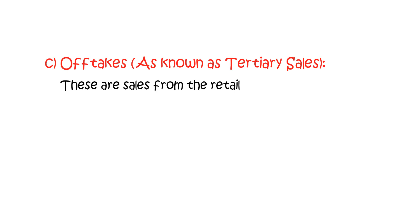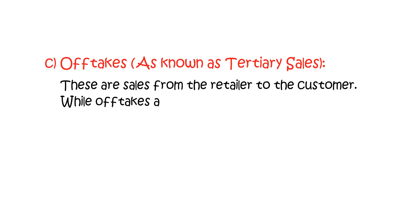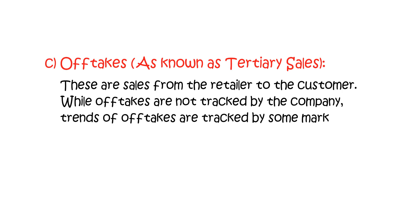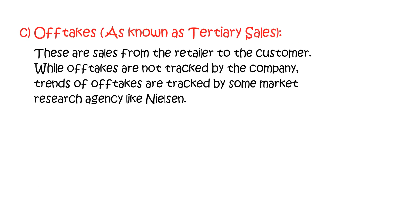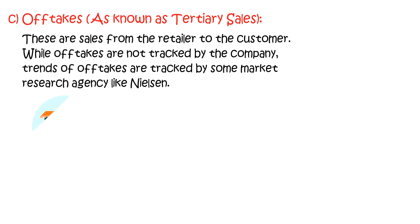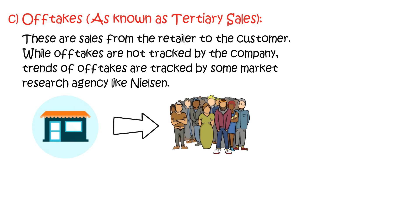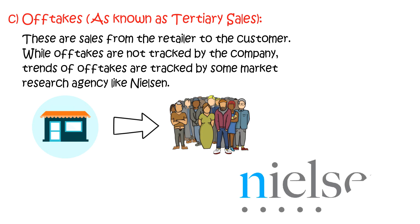Thirdly, off-takes, also known as tertiary sales. These are sales from the retailers to the customers. While off-takes are not tracked by the company, trends of off-takes are tracked by some market research agencies like Nielsen.